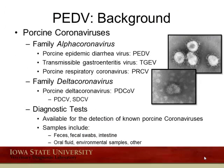Porcine epidemic diarrhea virus, or PED, is a member of the family Coronaviridae. It is an RNA virus and a member of the genus Alpha coronavirus, shared by two additional swine enteric viruses known as transmissible gastroenteritis virus and porcine respiratory coronavirus. The genus Delta coronavirus contains one virus of interest to the porcine industry: porcine Delta coronavirus, known by the acronyms PDCOV or PDCV.